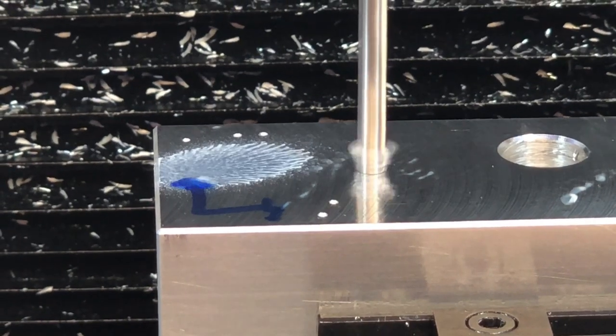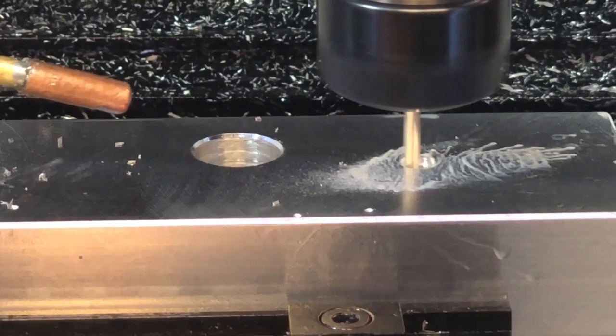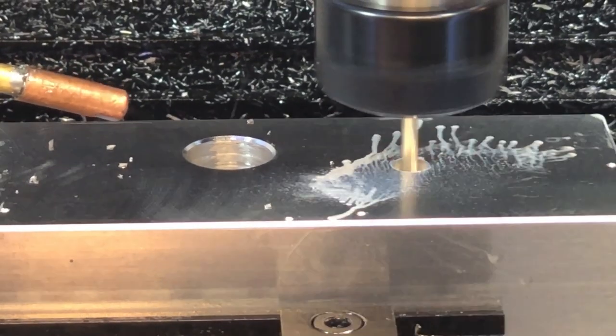I wanted a way to align the soft jaws together when I placed them into the vise. So I'm drilling and boring two quarter inch holes that I will press fit pins into.